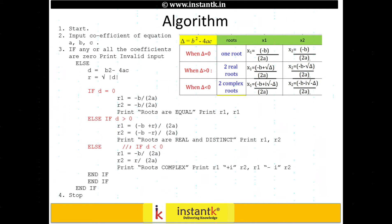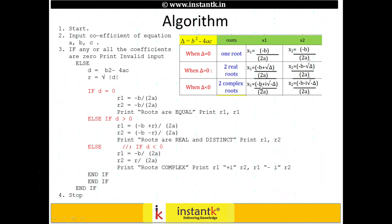The else part has no need to check anything because we already checked D equal to zero and D greater than zero, so else is obviously D less than zero. The root is going to be complex, with real and imaginary parts. The real part is minus B divided by 2A, and the imaginary part is square root of absolute D divided by 2A. The roots are represented as real plus i times imaginary and real minus i times imaginary.